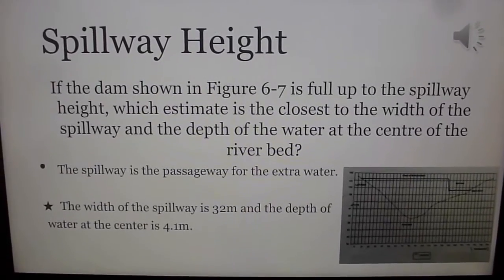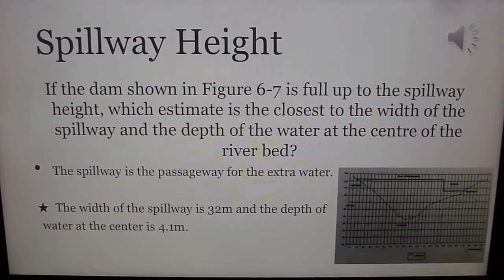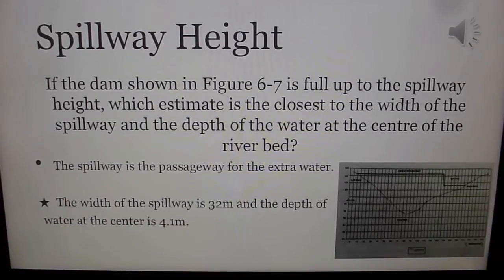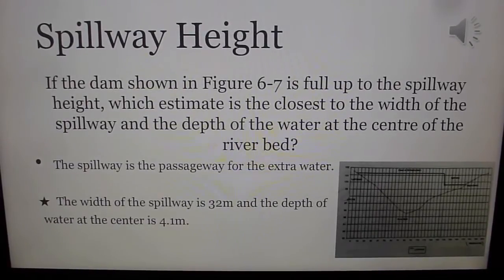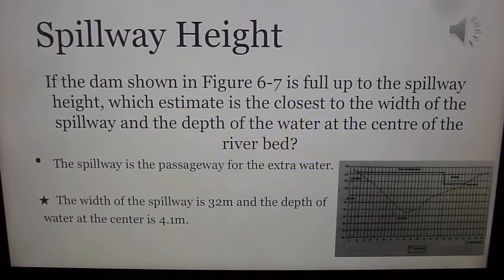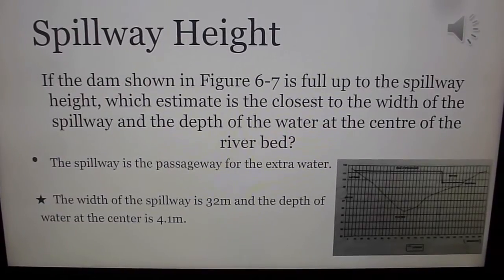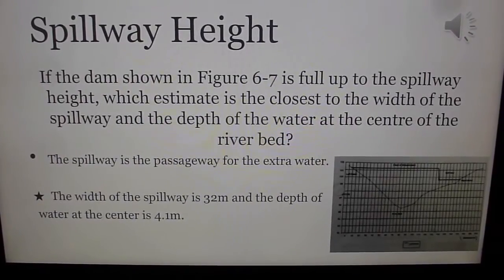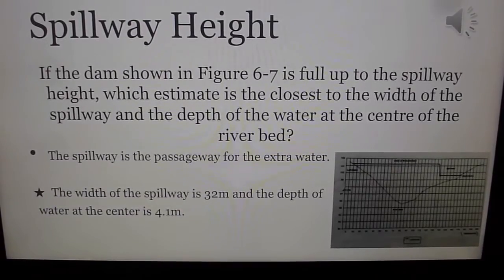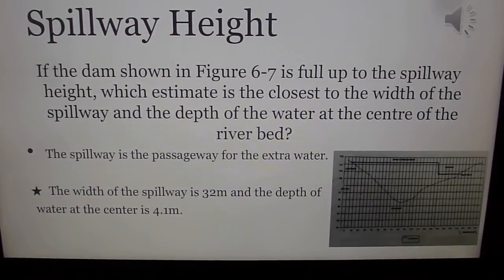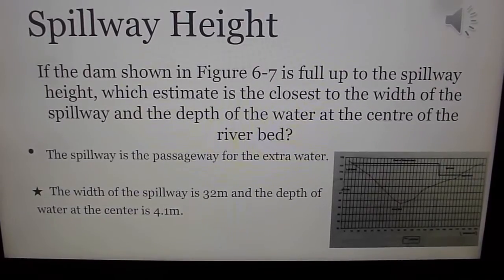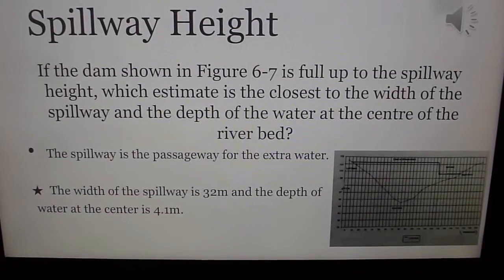To find the width of the spillway and the depth of water at the center of the riverbed, we use the graph. The spillway starts at 135 meters and ends at 167 meters. We subtracted the two to find the width of the spillway, which equals 32 meters. Then, to find the depth of water at the center of the riverbed, we found where the riverbed starts and ends and subtracted the two numbers to get 4.1 meters.